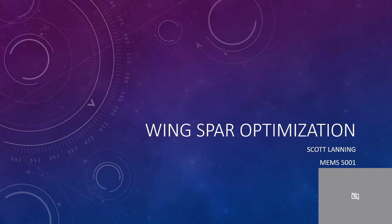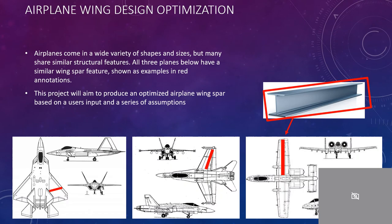I now will be optimizing a wing spar from an airplane. Airplanes come in a variety of sizes and shapes, shown below. The red spar, typically an I-beam or a C-channel, is usually what defines some structural definition for the wing.